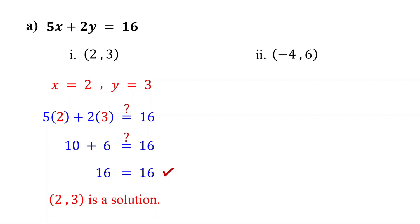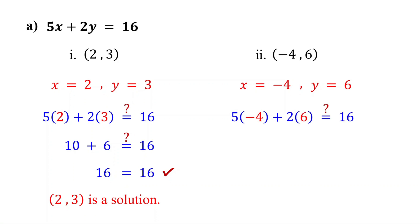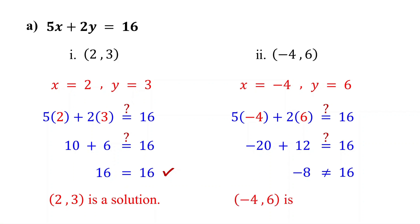What about the ordered pair negative 4 comma 6? Is it a solution? Let's check it. Remember, the first number is the x value, and the second number is the y value. So substitute negative 4 for x and 6 for y. Then simplify. 5 times negative 4 is negative 20, and 2 times 6 is 12. Negative 20 plus 12 is negative 8. Since negative 8 is not equal to 16, the ordered pair negative 4 comma 6 is not a solution.